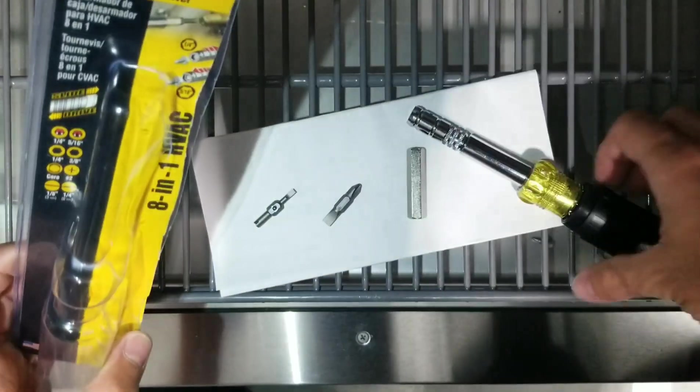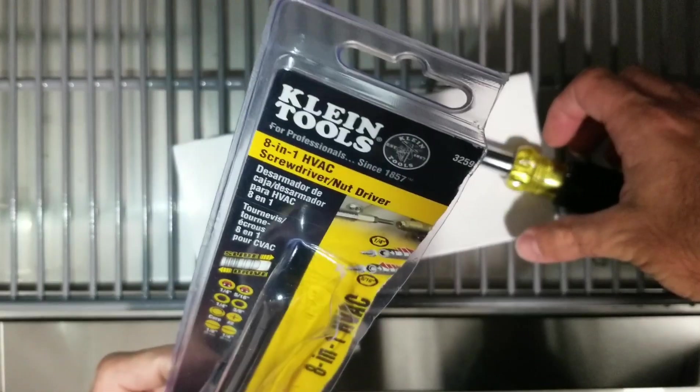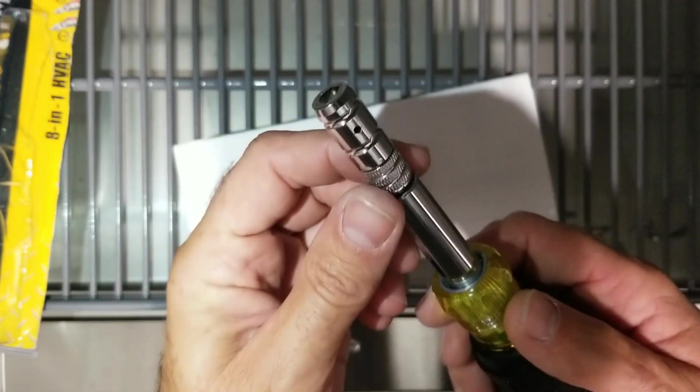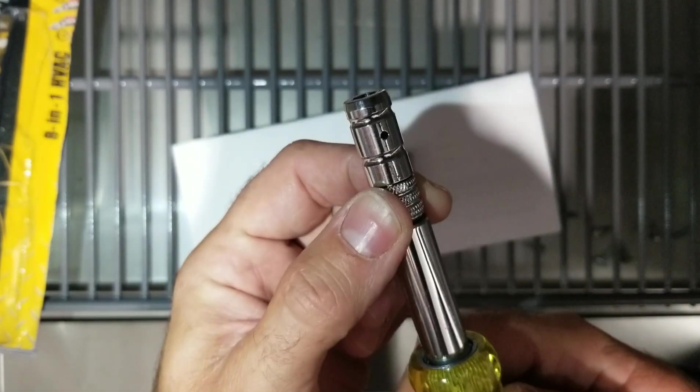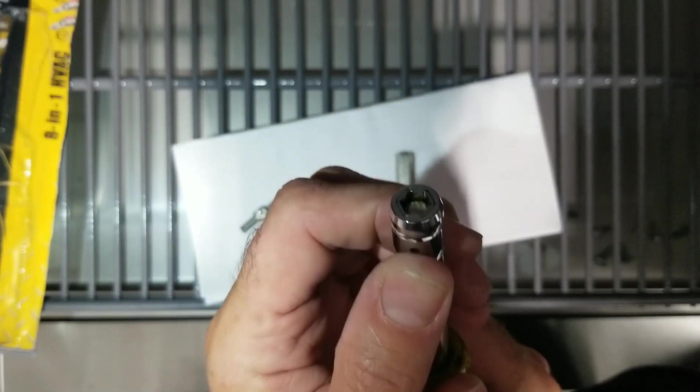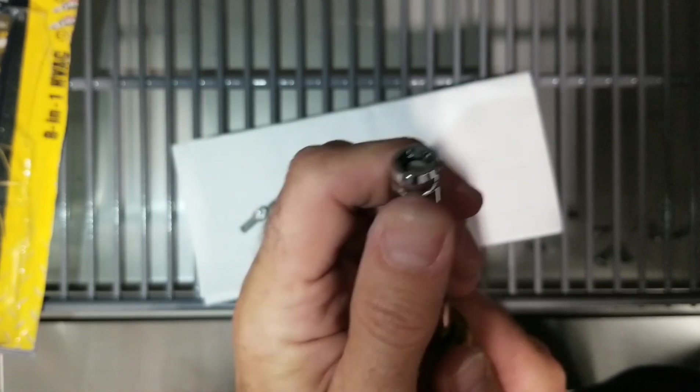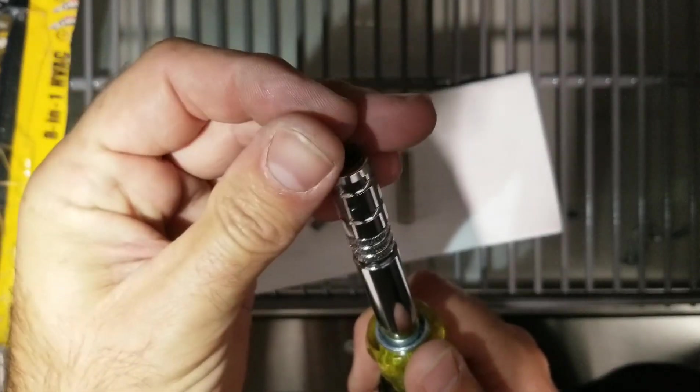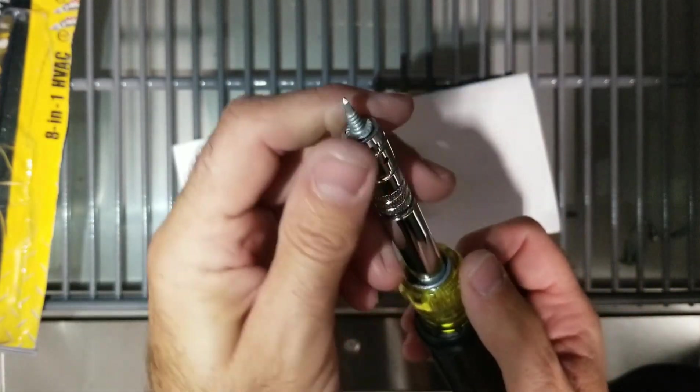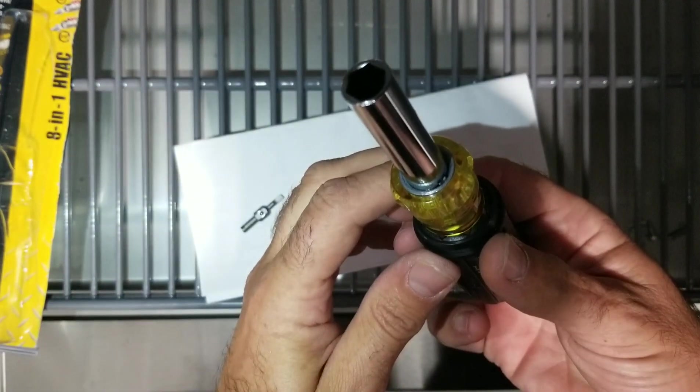So, I'm going to put this thing back together with this new screwdriver here. It's the new Klein 8-in-1 HVAC nut driver. What's pretty cool is it turns into a 5-16th. It goes from 1-quarter to 5-16th just by moving this up and down. So, there's 1-quarter nut driver, and there's 5-16th nut driver, and the magnet is actually pretty strong on this thing. And then we also have a 3-8th nut driver when we spin this.